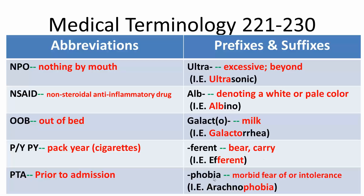Then we have PHOBIA, which is a morbid fear of or intolerance of something. For example, arachnophobia is a morbid fear of spiders. Now you can pause the video and review.